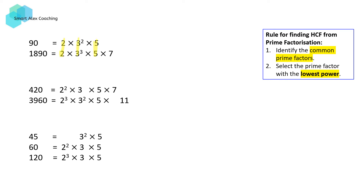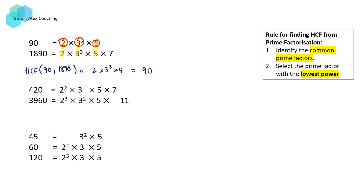We then go through and select the one with the lowest power. So for 2, both have got the power of 1, so I'm just going to select 2. 3 squared and 3 cubed — 3 squared has got the lowest power. So we're going to select 3 squared, and 5 — they both have the same power of 1. Therefore, the HCF of 90 and 1890 is going to be 2 times 3 squared times 5, which is equal to 90.